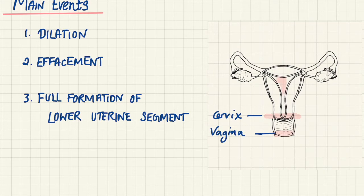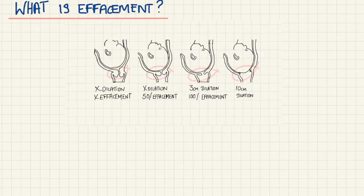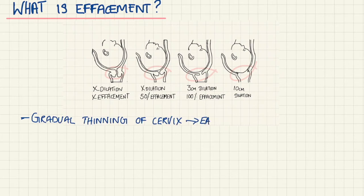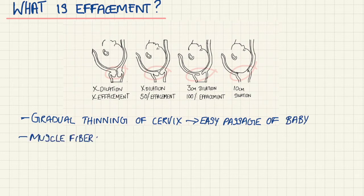Let's talk about what is effacement and dilation and the mechanisms behind what causes this. Effacement is usually defined as a gradual thinning of the cervix which allows for easy passage of the baby. It is the process by which muscle fibers of the cervix are pulled upwards and merge with the fibers of the lower uterine segment.